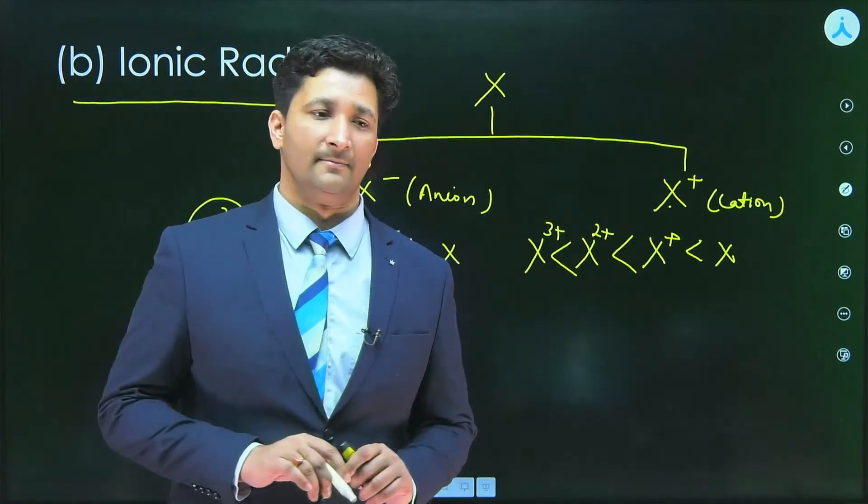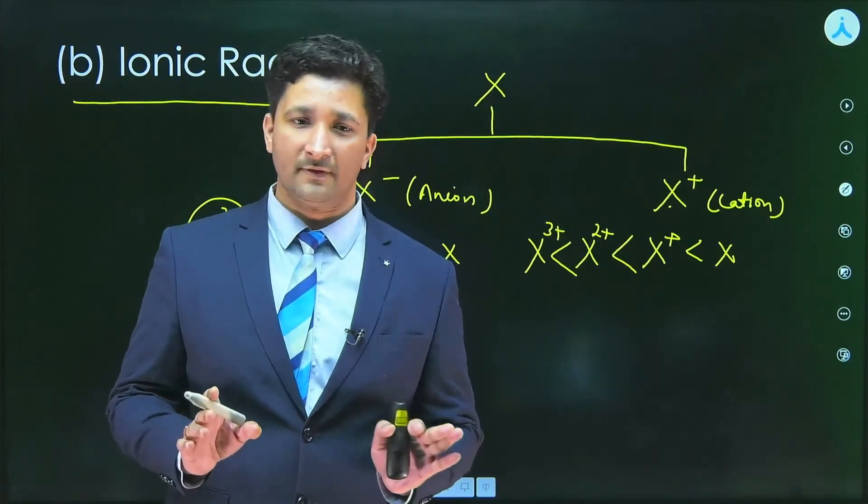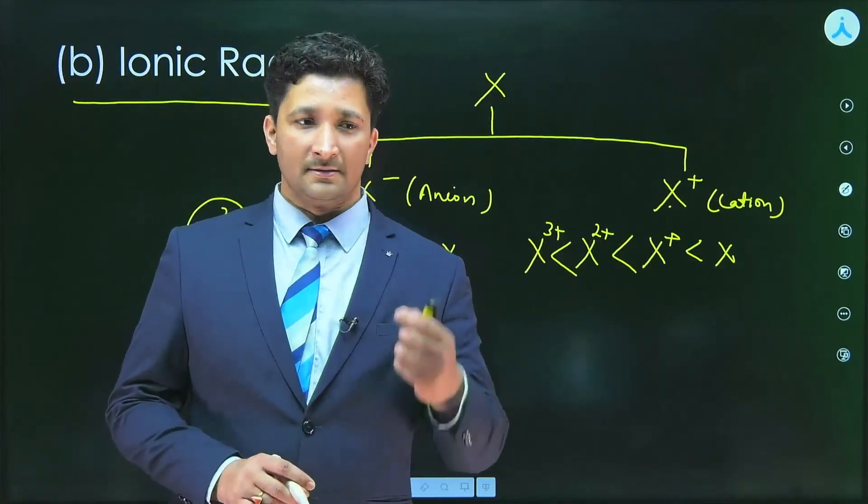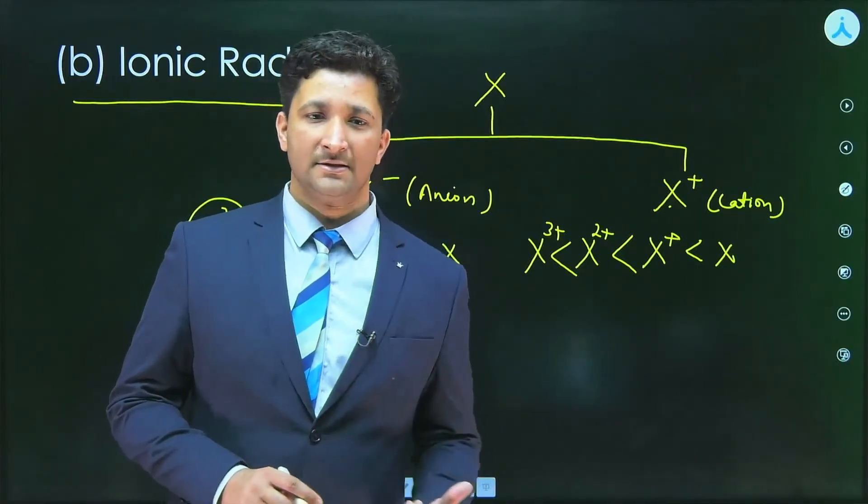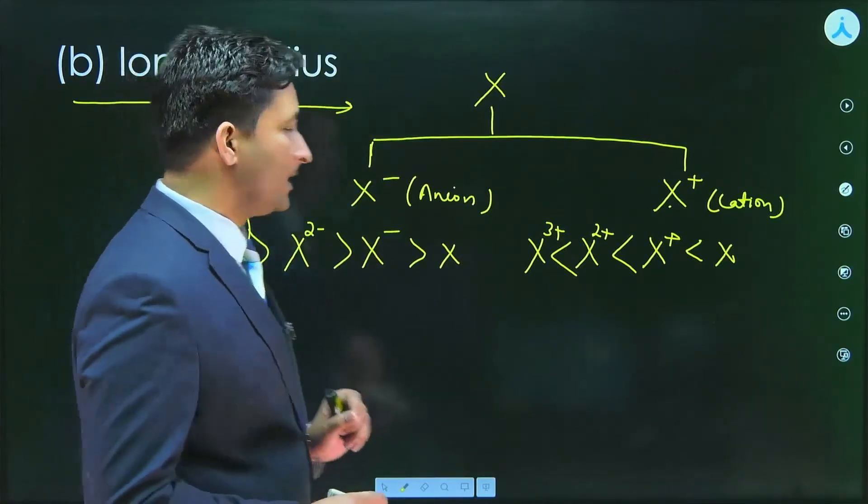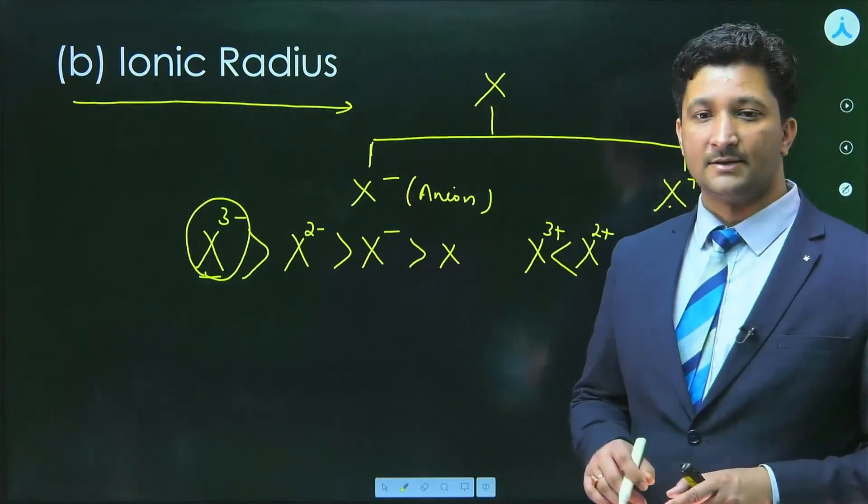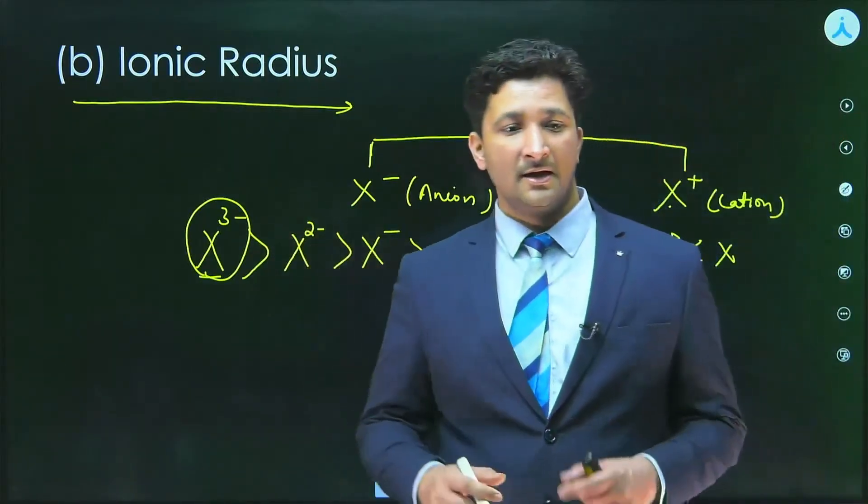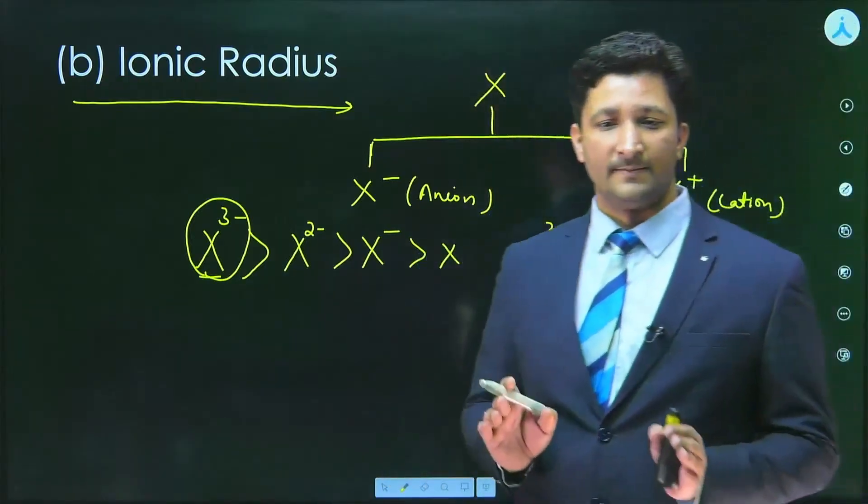So therefore, one thing you have to keep in mind that among isoelectronic species, in the examination they are going to ask about the size of isoelectronic ions. The size of cations is lesser as compared to anions. Greater the negative charge, higher will be the size, and greater the positive charge, smaller will be the size.